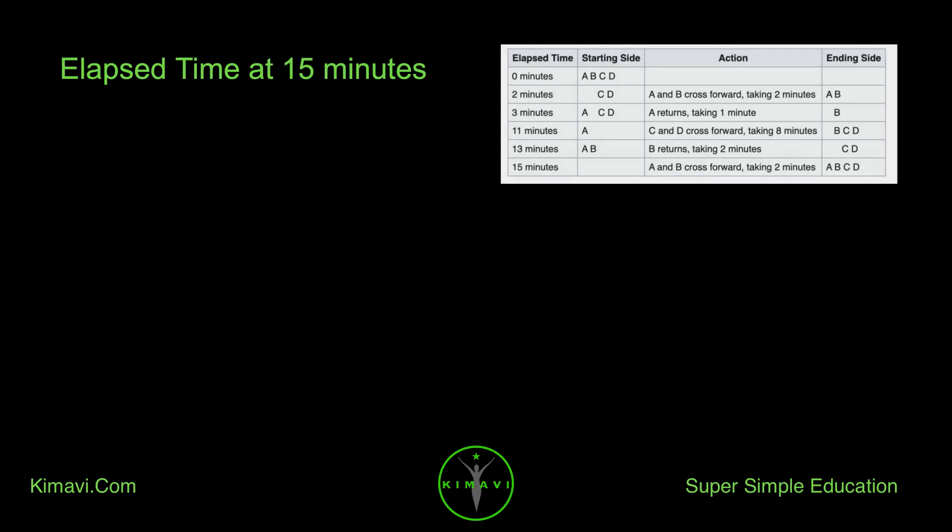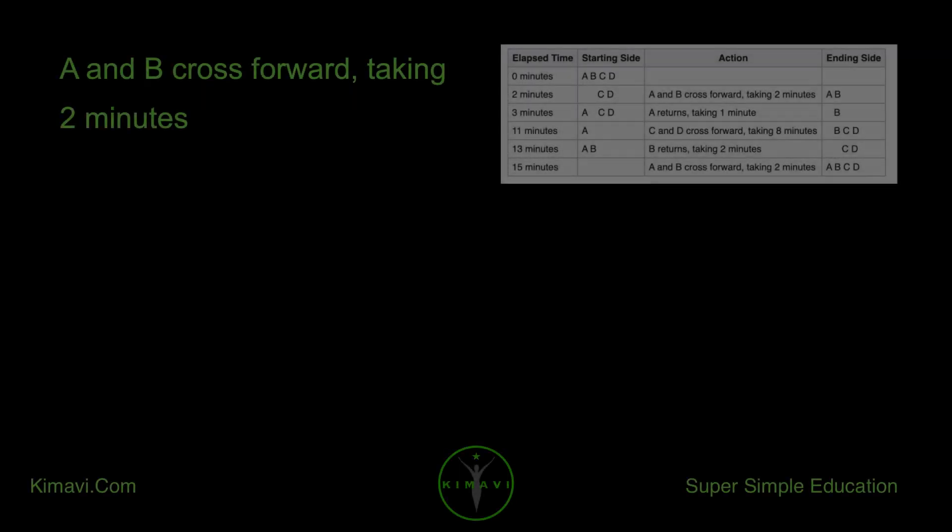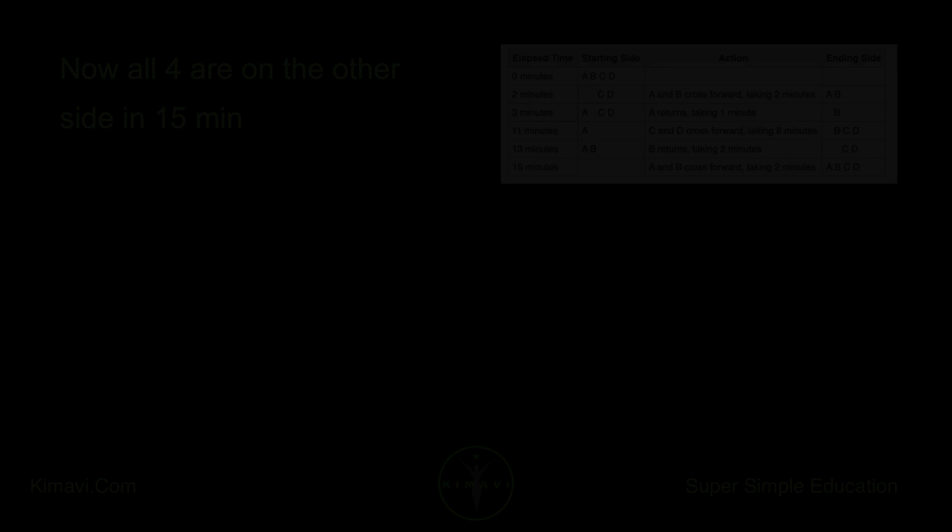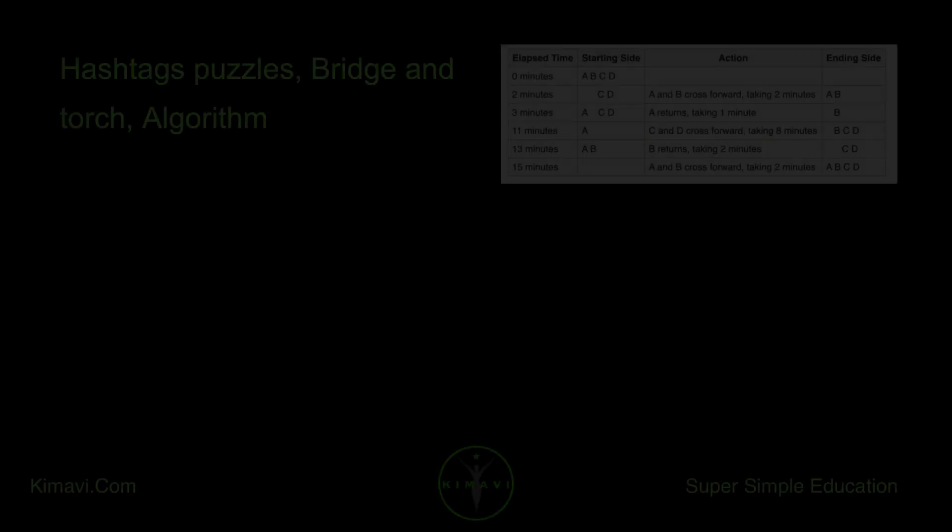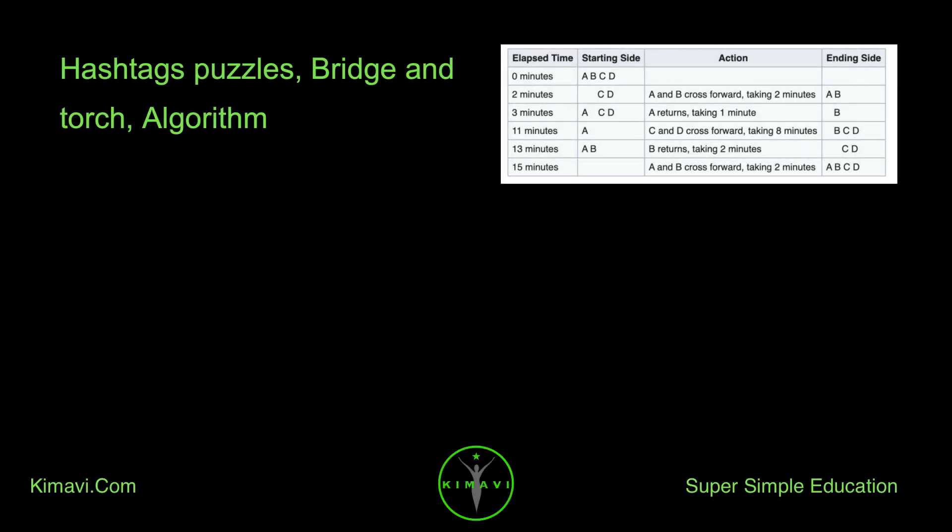Elapsed time at 15 minutes: A and B cross forward, taking two minutes. Now all four are on the other side in 15 minutes. Hashtags: puzzles, bridge and torch, algorithm.